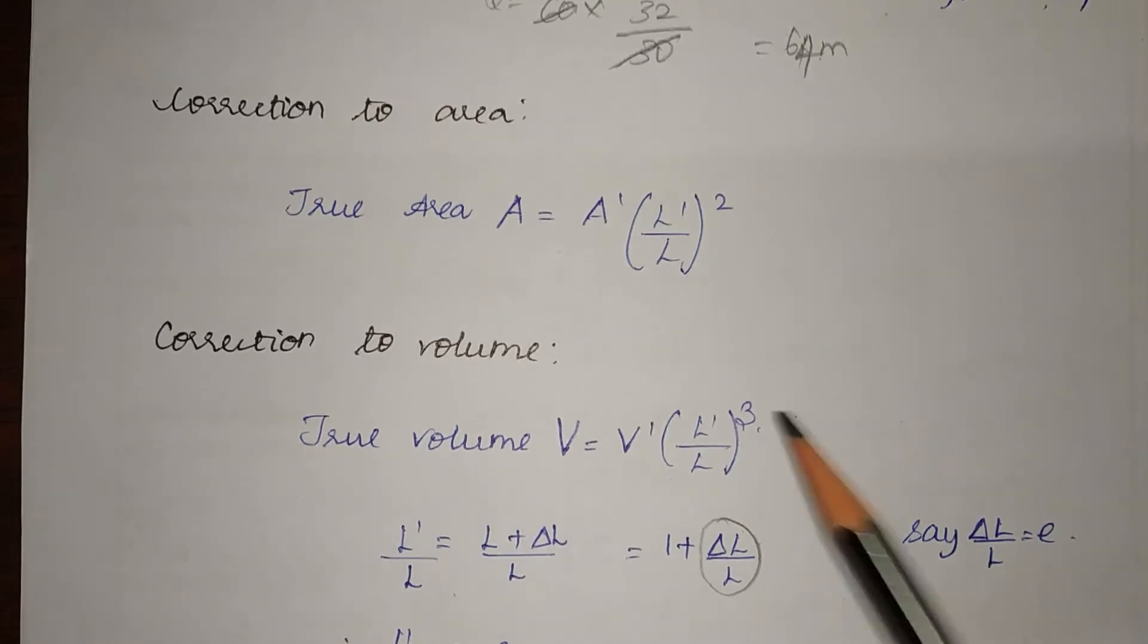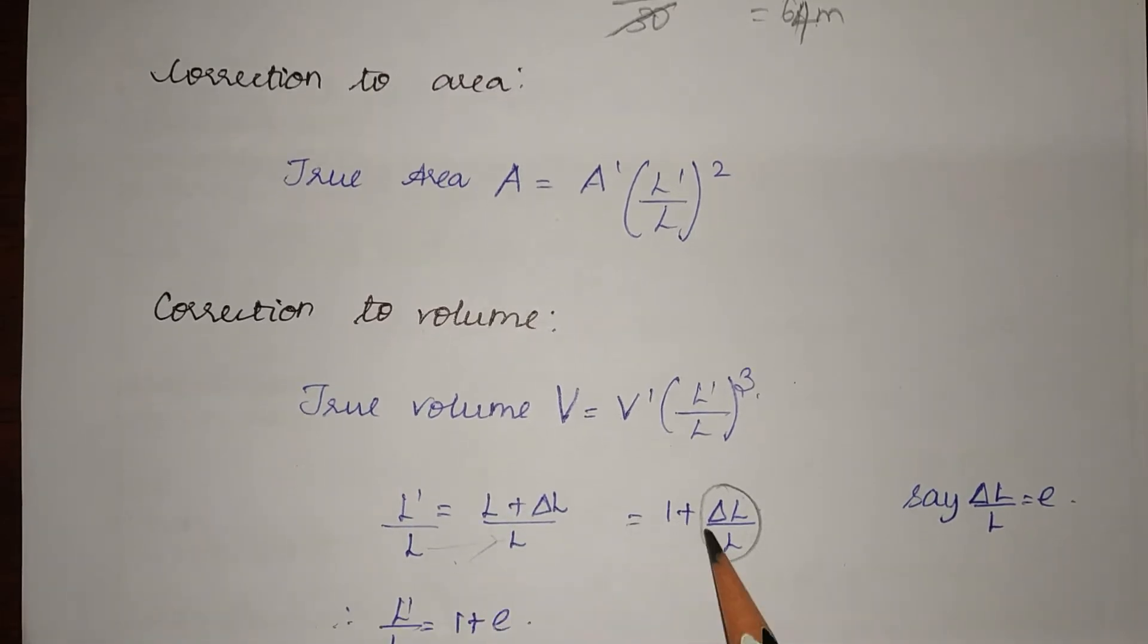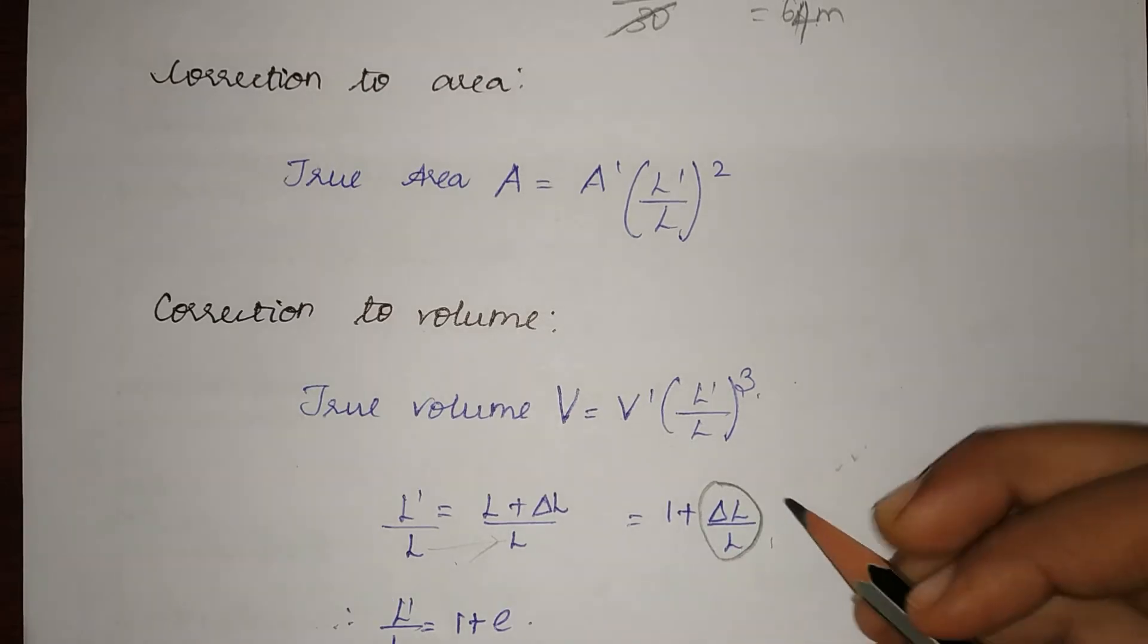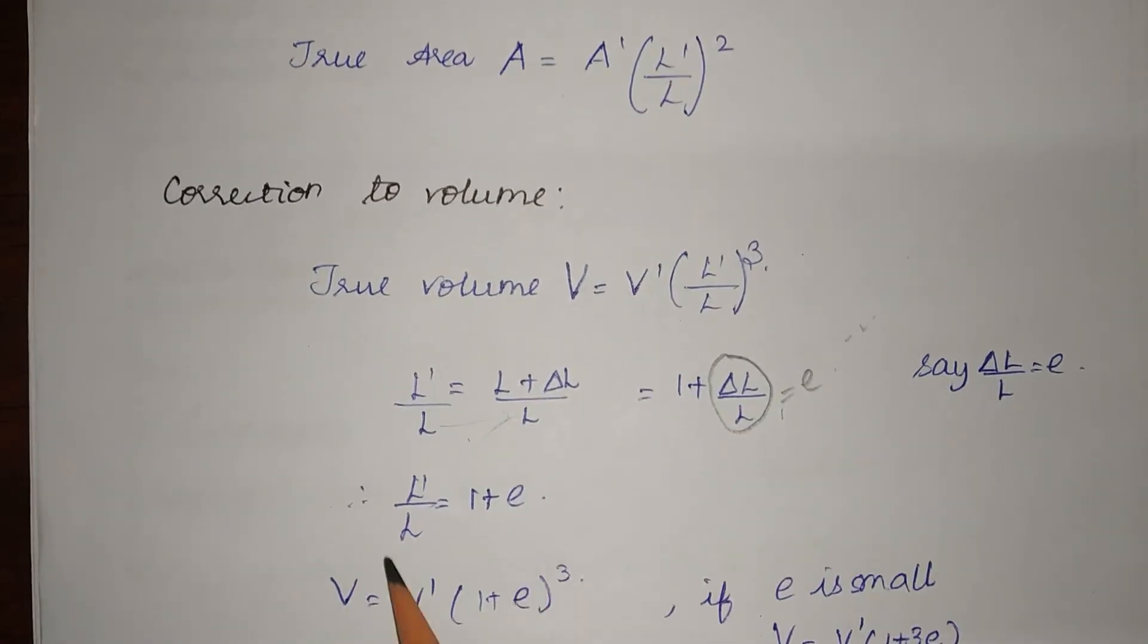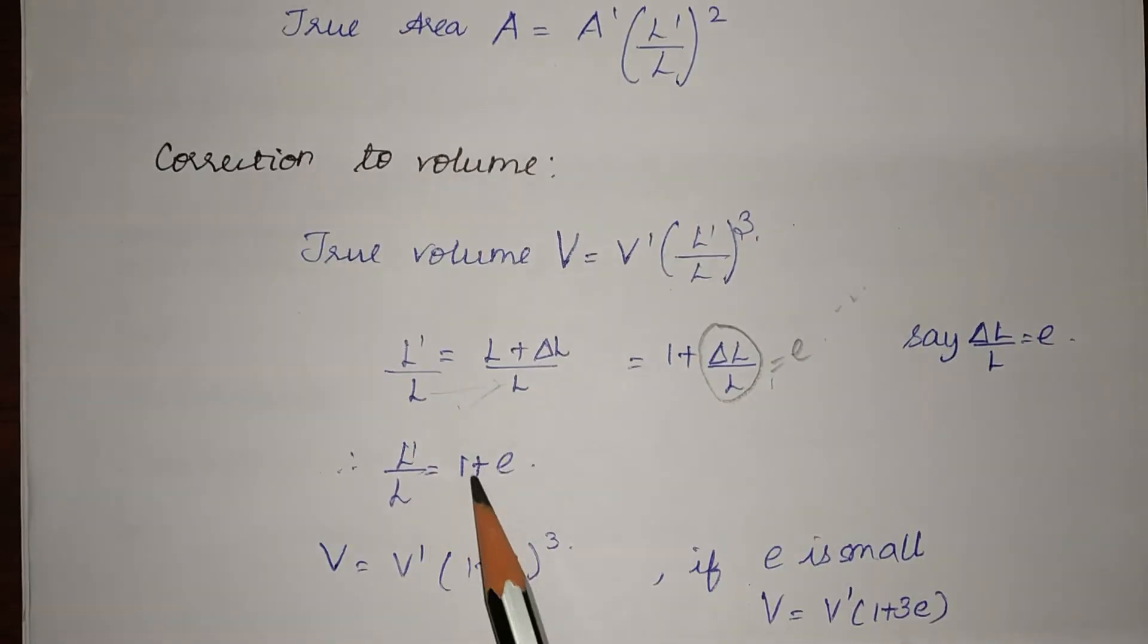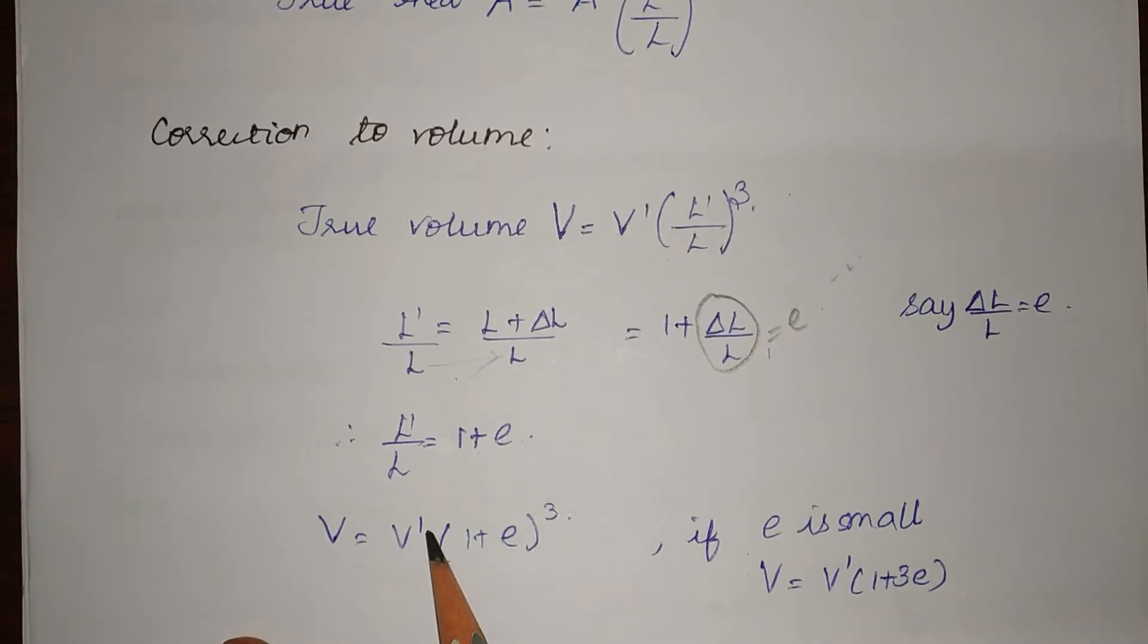And here L′/L can be written as the real length plus ΔL, the change in length, by L which is the same denominator. This can be simplified as 1 + ΔL/L where ΔL/L can be written as E. Further, the formula becomes L′/L is 1 + E, and therefore V equals V′ times (L′/L) where L′/L becomes (1 + E)³.